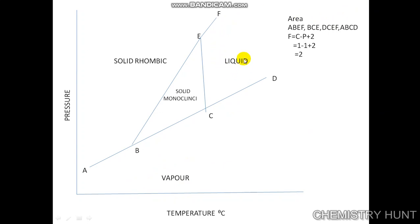Each area has only one phase. So F equals C minus P plus 2. In any single-phase area — whether solid rhombic, solid monoclinic, liquid, or vapour sulphur — the component is 1 and the phase is 1, giving a degree of freedom of 2. Hence we say it is a bivariant system, meaning we have to specify both temperature and pressure.